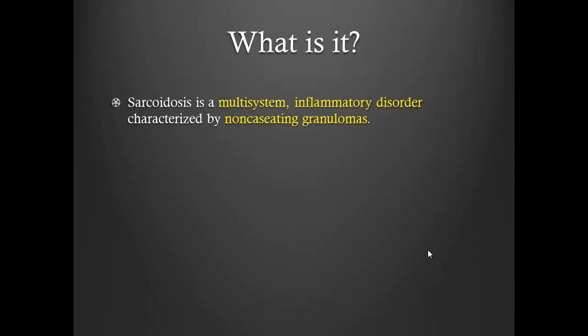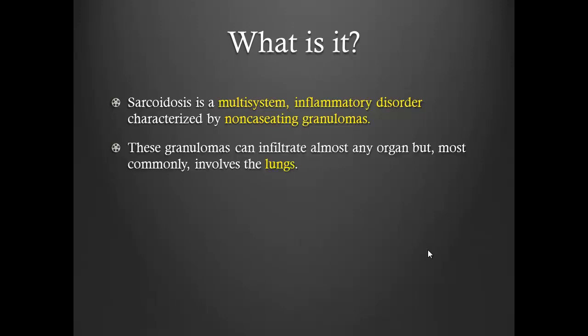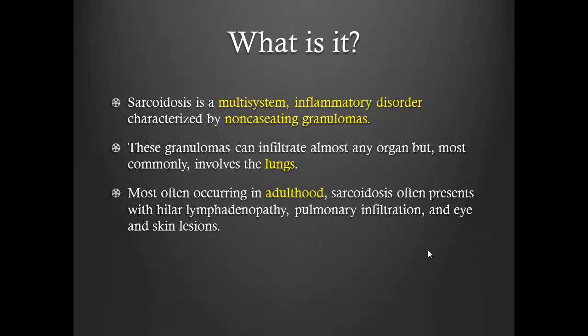So what is sarcoidosis? It's basically a multi-system inflammatory disorder, and it's defined by the presence of non-caseating granulomas, with rare exceptions. These granulomas can be present anywhere in the body, but there are some areas of predilection where they occur more frequently, such as the lungs, which is why a pulmonologist is giving this talk. It's mostly seen in the adult age group with peak incidence between ages 20 to 40, although it can occur later.